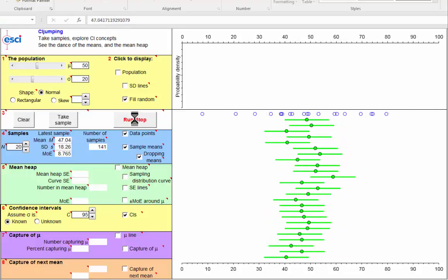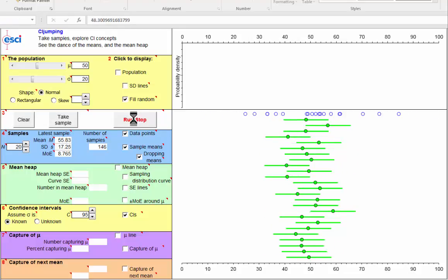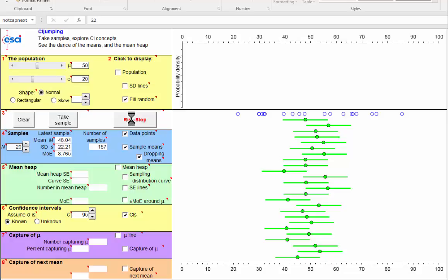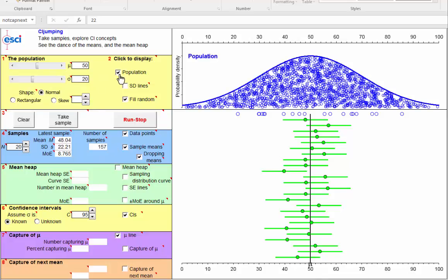Now notice we're doing something very unusual here inside the computer. We're taking lots and lots of samples, running lots of experiments. Usually, a researcher has only one. Now, I can mark in, because I'm in the computer, I actually know where the population mean is, I can even show you the population. There it is. And I can mark capture of mu. ESCI displays in red those sample means that are out in the tails of the mean heap, sufficiently far from mu, that the plus or minus Moe, the confidence interval, does not capture mu.